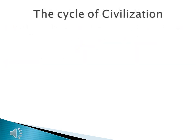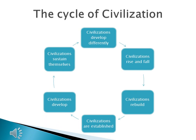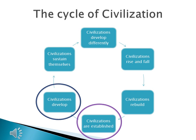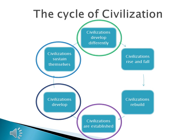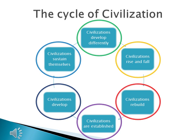So now we've defined the term civilization, uncovered its characteristics, and understood its effects. Now it's time to look at the cycle of civilization, which we will spend the majority of this year analyzing. Civilizations are established — they start. They develop and grow. They sustain themselves and can be around for a very long time. They develop differently depending on geography. They can rise to great heights and fall to great depths. And civilizations can rebuild. Looking at history through this cycle, you'll not only understand the facts but be able to apply them to understand how humans have grown from 3300 B.C. to 1500 A.D. I hope you enjoyed this lecture, and I'll see you in class.